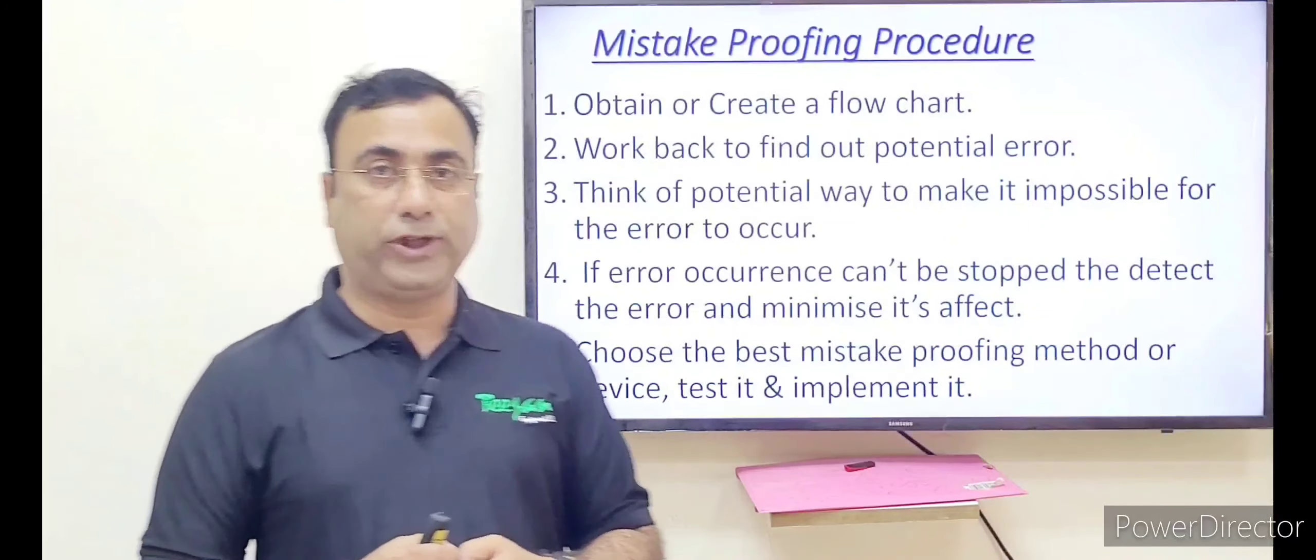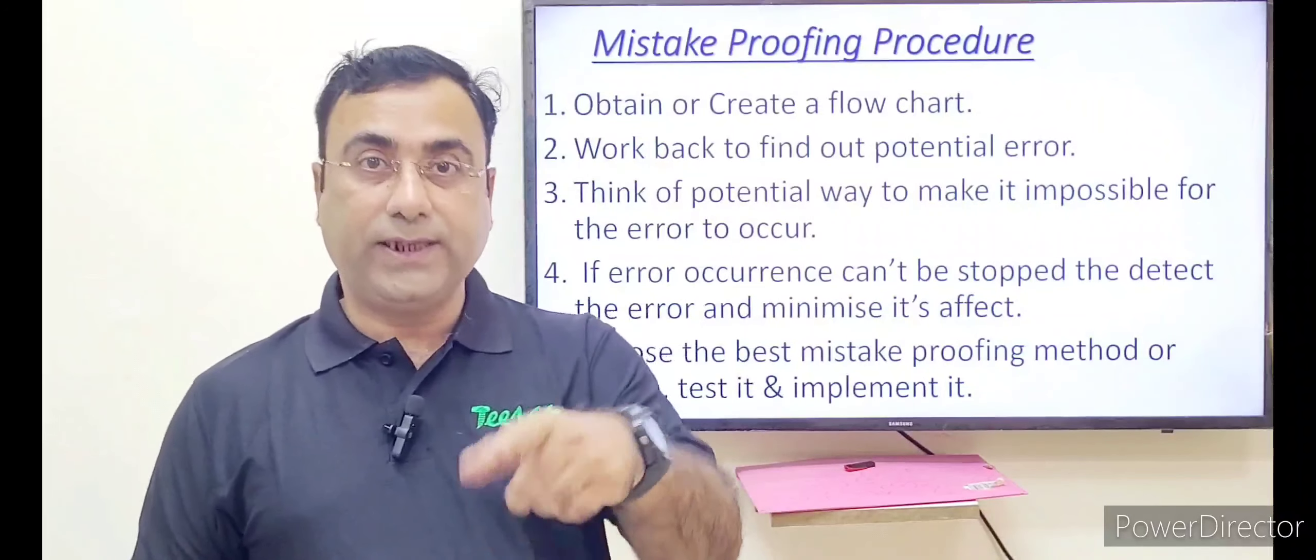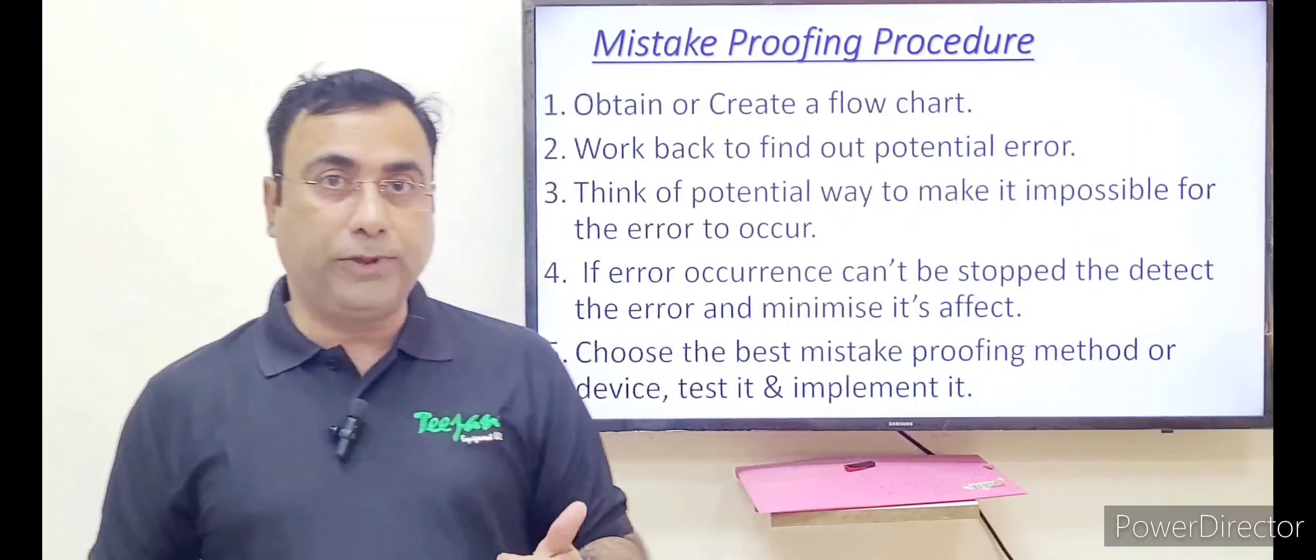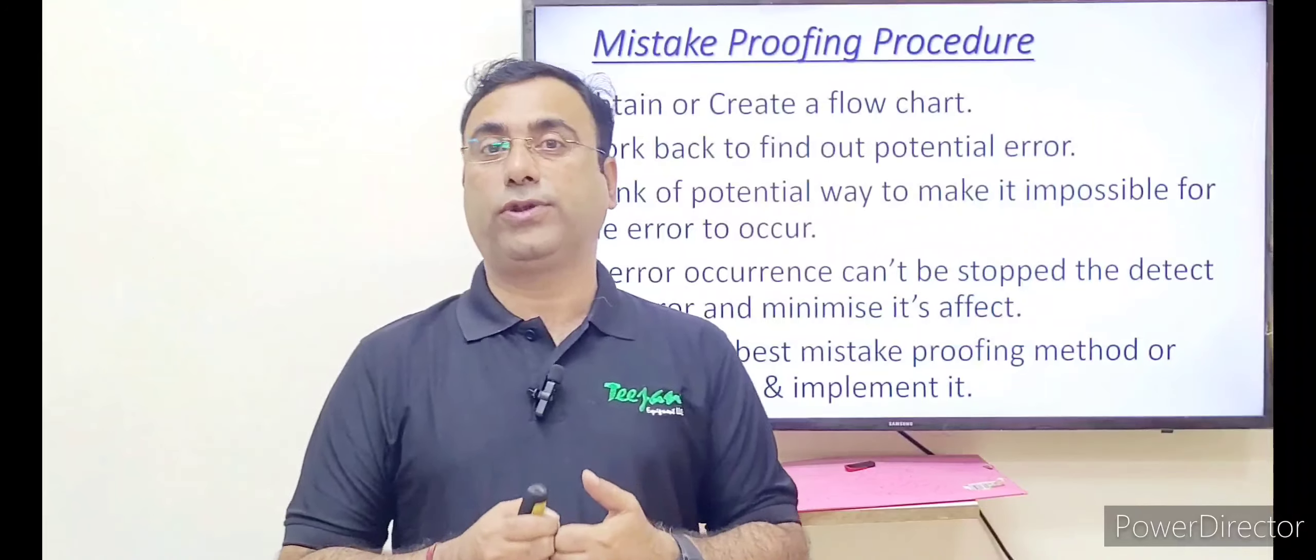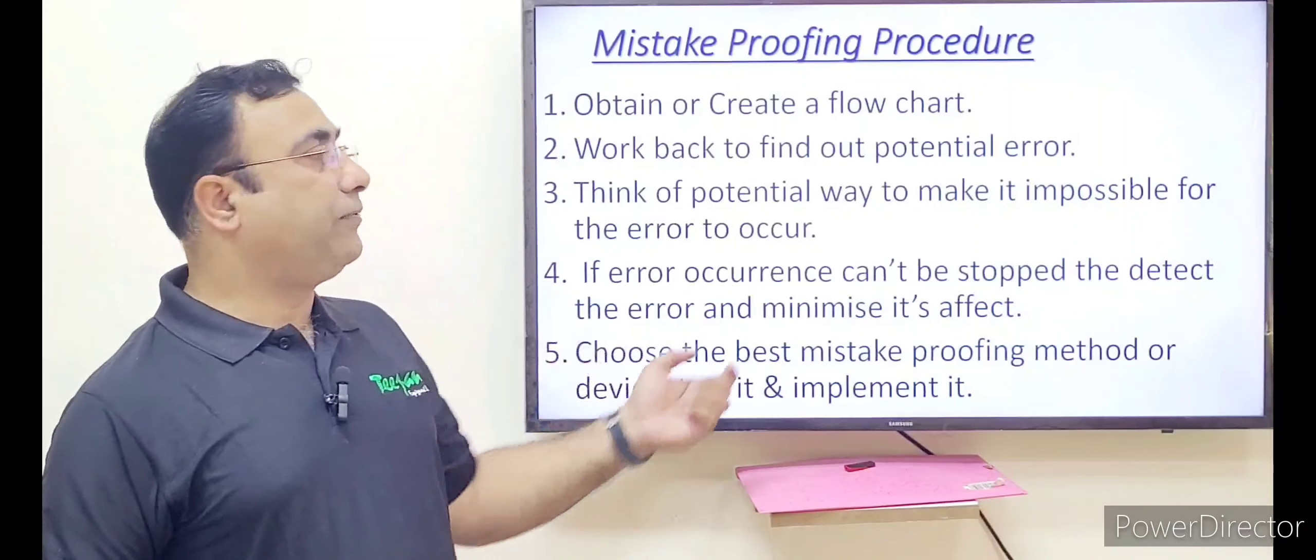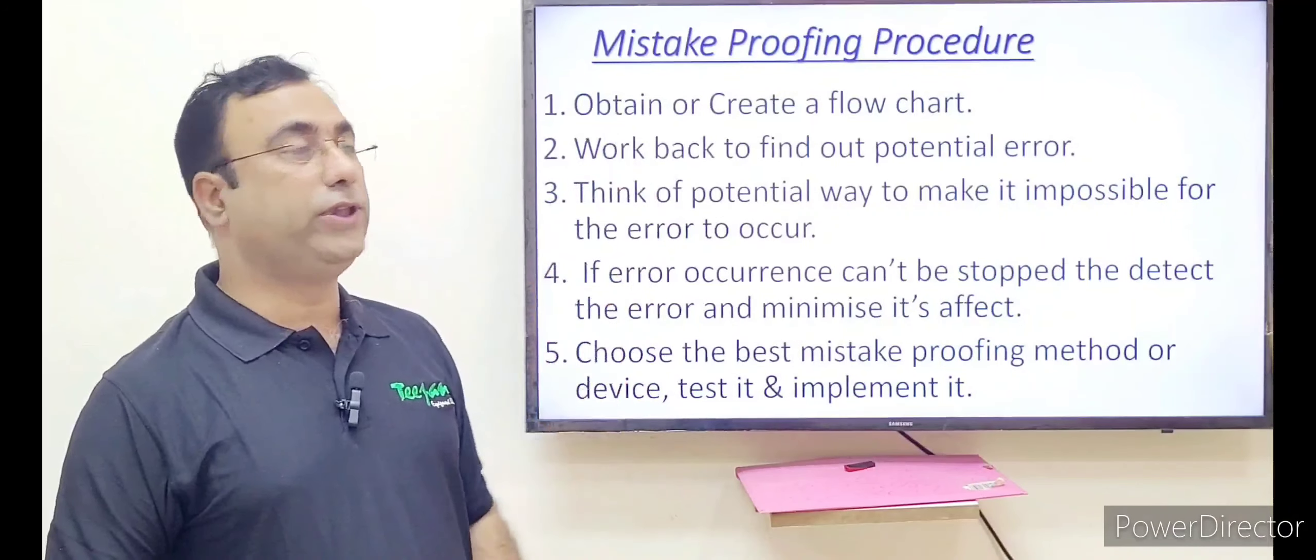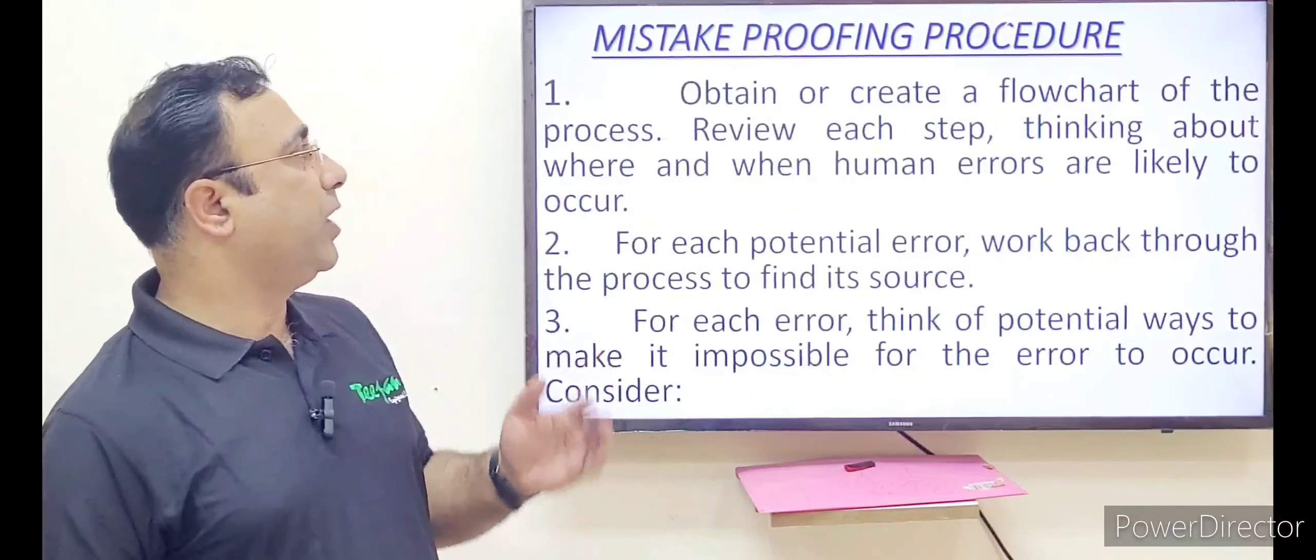Then the fourth one is, choose the best mistake proofing method. Try it, implement it. Before implementing, you need to go throughout the inspection. These are the five situations where we are using the mistake proofing procedure.